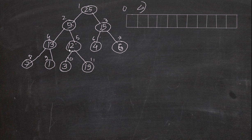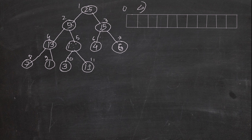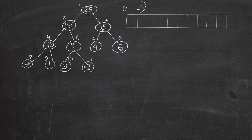Moving on, we can see this parent is smaller than its child, so we swap 12 and 19 because 19 is greater. Now 19 is here and 12 is there. We check: this is fine, this one is also fine, but 9 should not be here — 19 is the greatest and should be here, so we swap 9 and 19. Now this tree is in max-heapify format: every parent is greater than its children.